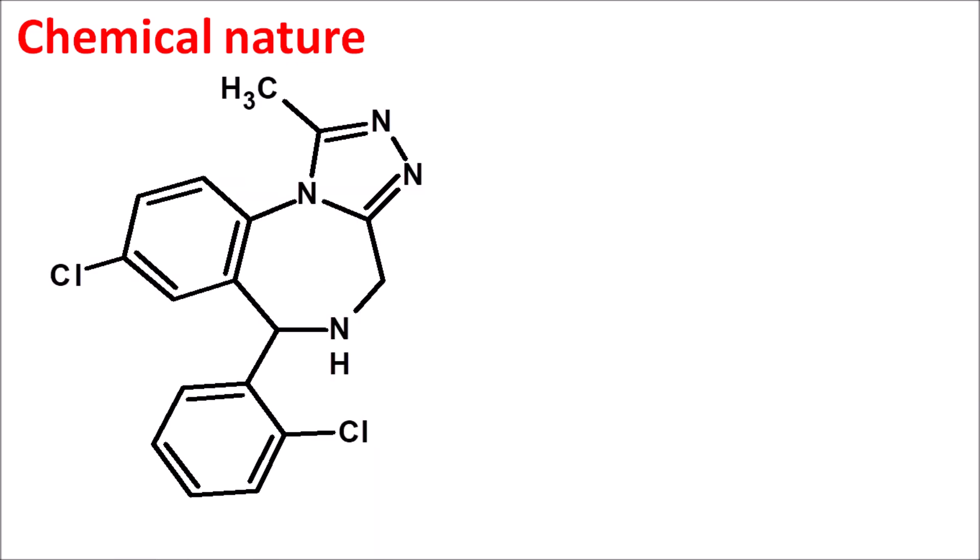First, let us see the chemical nature of this drug. This is the structure of trizolam, and here we can observe the benzodiazepine ring fused with the triazol ring. Triazol is a five-membered ring system with three nitrogens. Based on IUPAC rules, we start numbering from the topmost carbon in the fused ring structure: 1, 2, 3, 4, 5. In the benzodiazepine, the nitrogen is at the fourth position, but in this fused ring system it is at the fifth position.